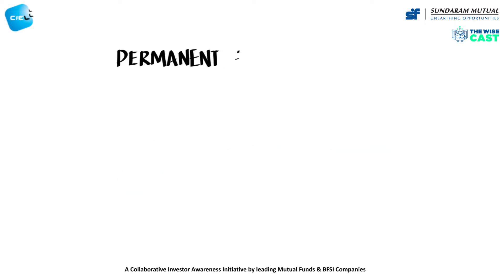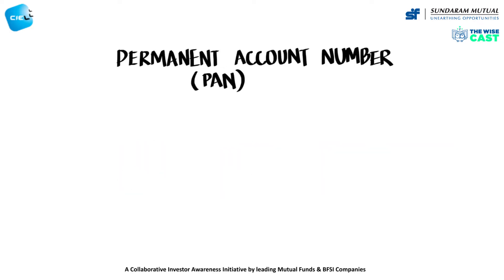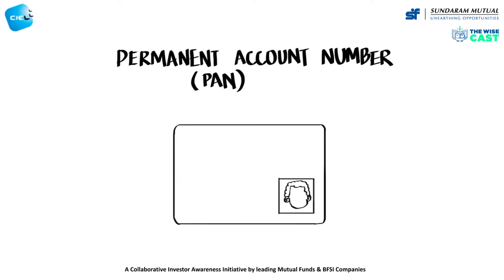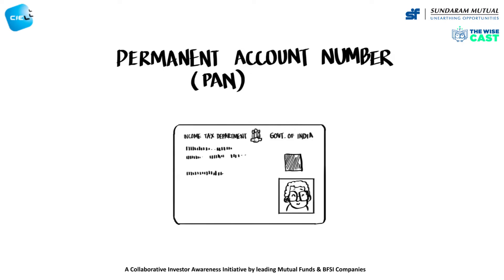The Permanent Account Number, or PAN, is an identification number printed on a card with a photograph and issued by the income tax authorities. PAN has been notified as the single identification number for all financial transactions. Applications can be made online to service providers such as NSDL, and a nominal fee is also payable.